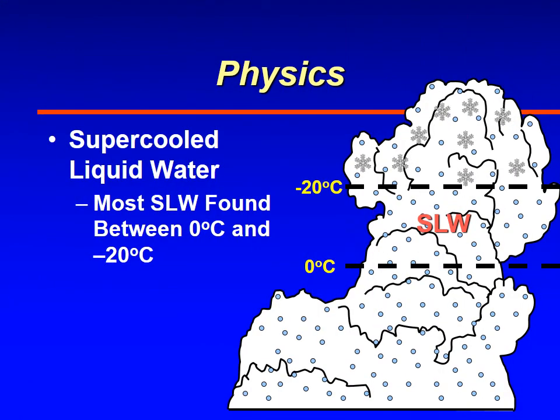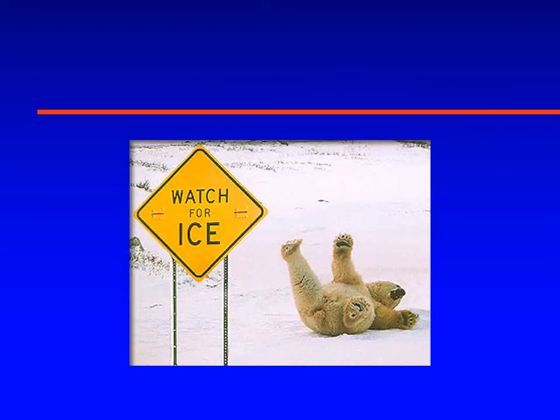That's why you find most supercooled liquid water at temperatures between zero and minus 20°C — that's where the ice nuclei are not working. At temperatures colder than minus 20, the ice nuclei get the freezing process going and the cloud is made of mostly ice crystals. So those are the requirements for icing. In the next section, we're going to talk about the collection efficiency of airfoils and other objects.